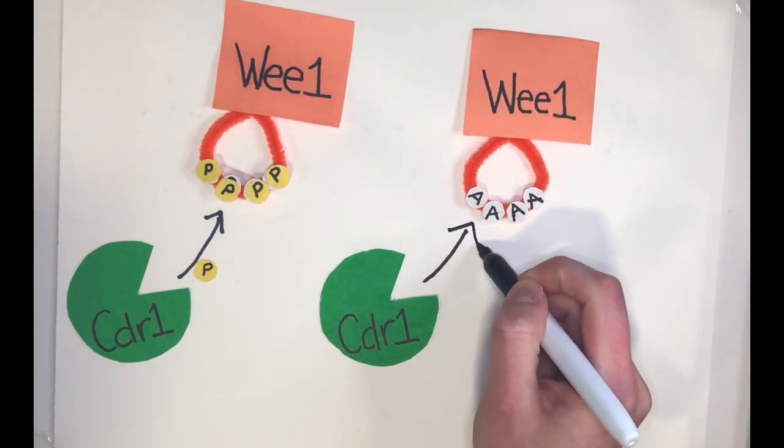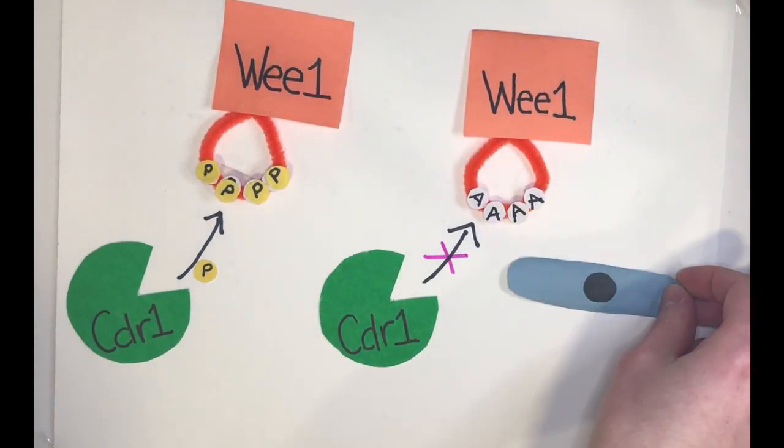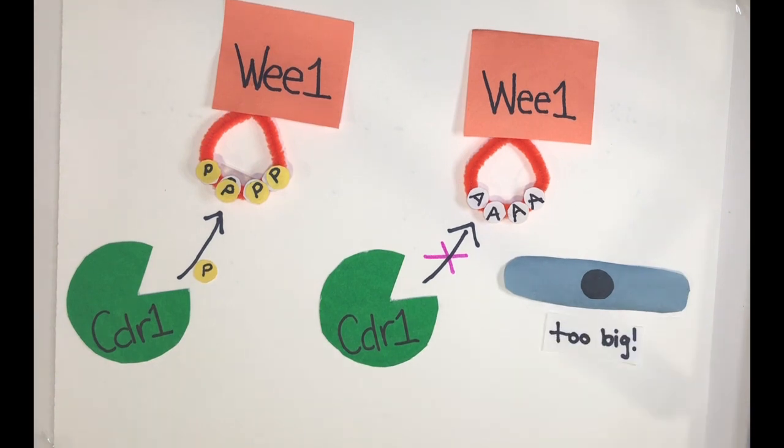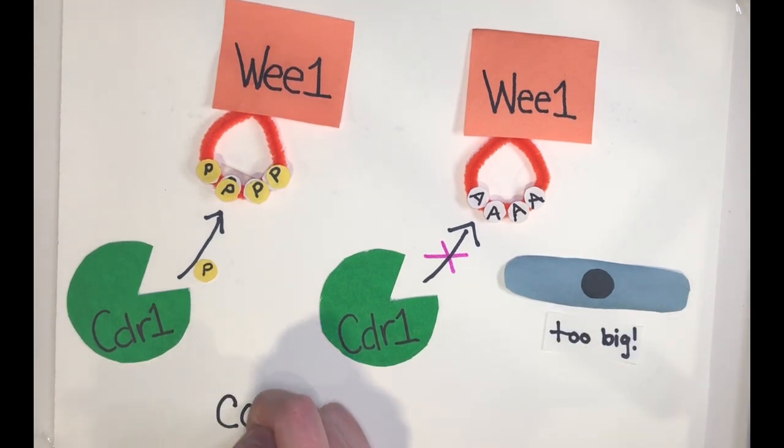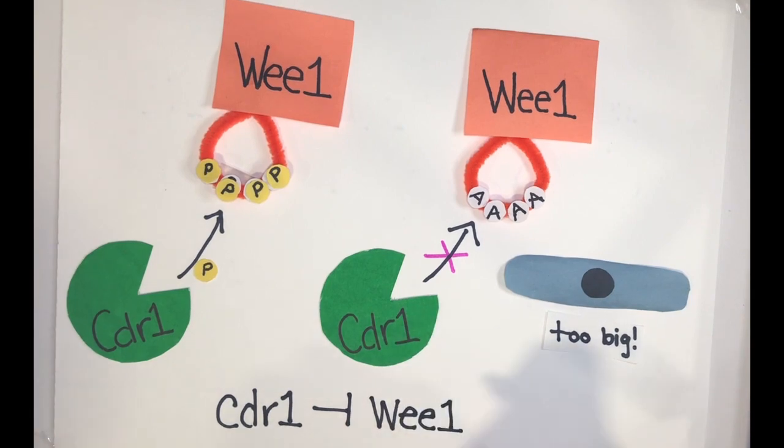When we made a mutant of Wee1 that cannot be phosphorylated by CDR1, cells grew too big before dividing because Wee1 was overactive, demonstrating that CDR1 directly inhibits Wee1 in cells.